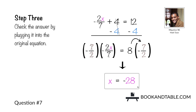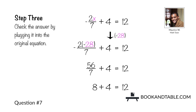Step three: check this by plugging it into the original equation. Negative 2 times negative 28 is positive 56. 56 divided by 7 is 8. 8 plus 4 is 12. So when x is equal to negative 28, the value on the left equals the value on the right. The answer to question number seven is x is equal to negative 28.